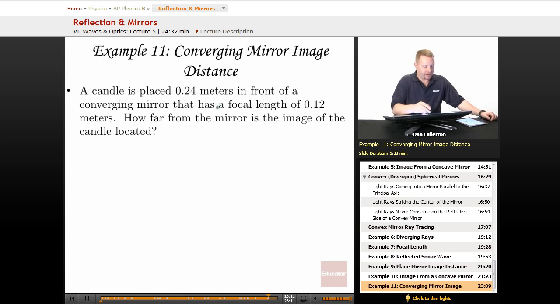Let's try one more. A candle is placed 0.24 meters in front of a converging mirror that has a focal length of 0.12 meters. How far from the mirror is the image of the candle located? Well, let's use our mirror equation.